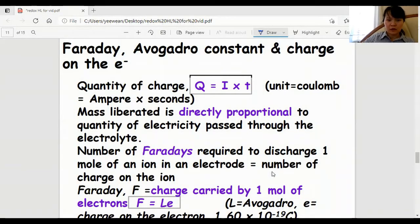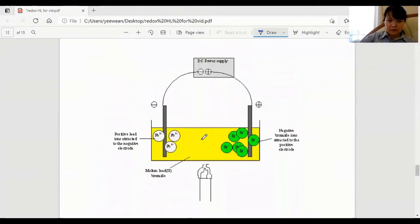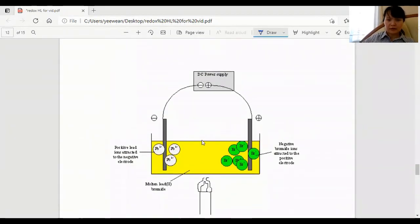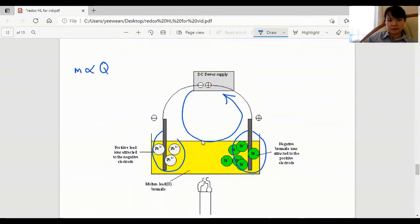This video is for the revision of quantitative electrolysis. In an electrolytic cell, the mass deposited is directly proportional to the charge that passed, and this charge is equal to I times T, where I is the current and T is how long the circuit is on.